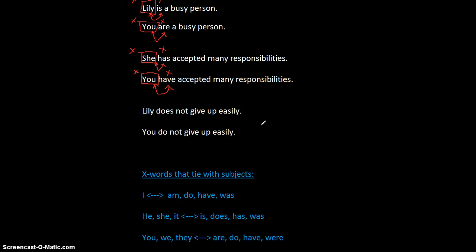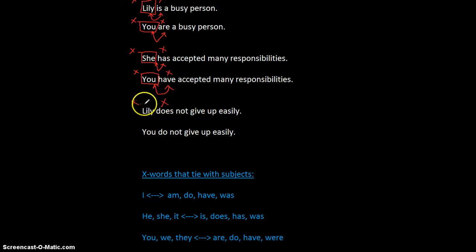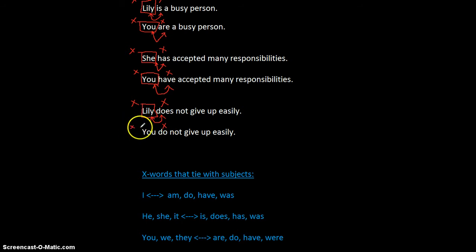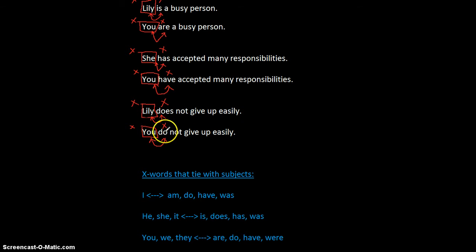'Lily does not give up easily.' 'You do not give up easily.' Let's mark the x-words. I bring 'does' to the front: 'Does Lily not give up easily?' Lily is the subject, and 'does' ties with Lily. In the next sentence, the only thing different is the subject changed from Lily to you, and I also had to change the x-word from 'does' to 'do.' We've just found the first tie in English.